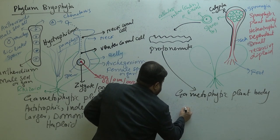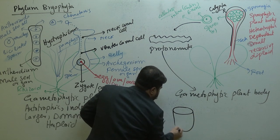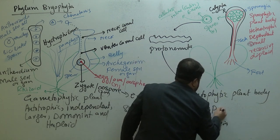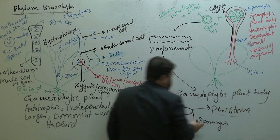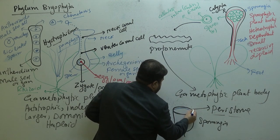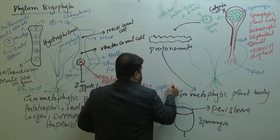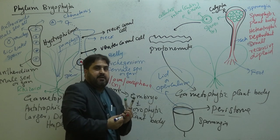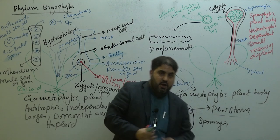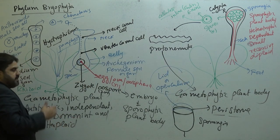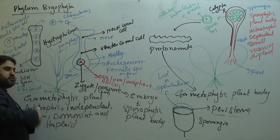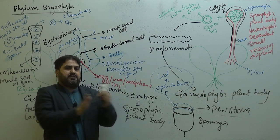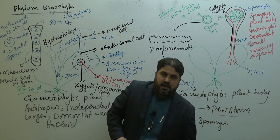The sporangia is a cup-like structure with a mouth area called the peristome (peri means around, strome means mouth). It has a lid-like structure called the operculum. Bryophytes migrated from water toward land around 400 million years ago, developing into tracheophyte plants.